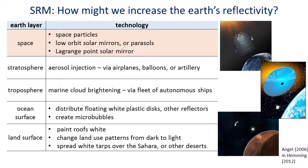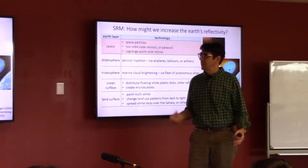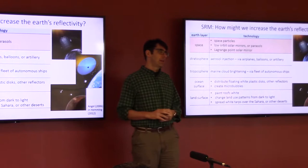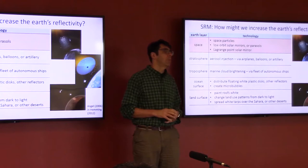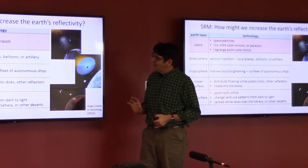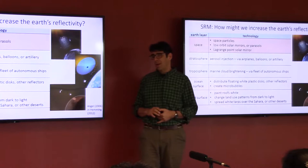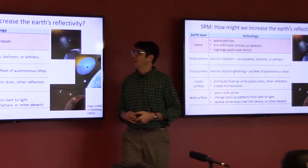Solar radiation management has a variety of different technologies. Perhaps the most intriguing, and also maybe the most science fiction-related, are space-based ones. You might be able to put particles in space, or some kind of large umbrella or mirror. If you put it at the Lagrange point between the Earth and the Sun, it would need to be about the size of the continental United States — so it's not small. Getting it there would be expensive, but it's not probably impossible.